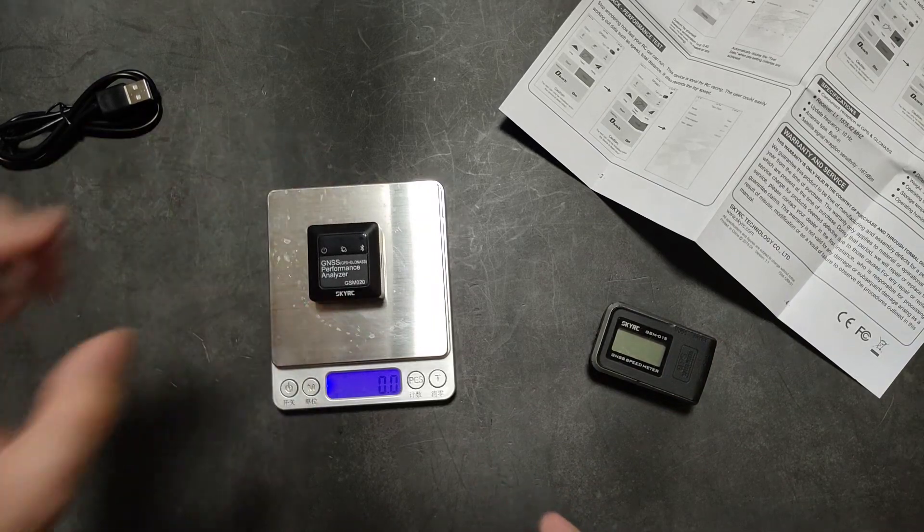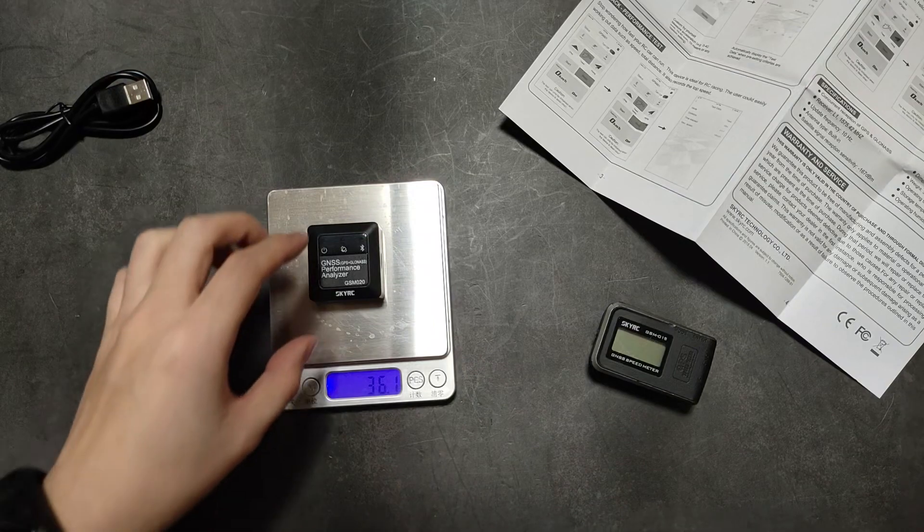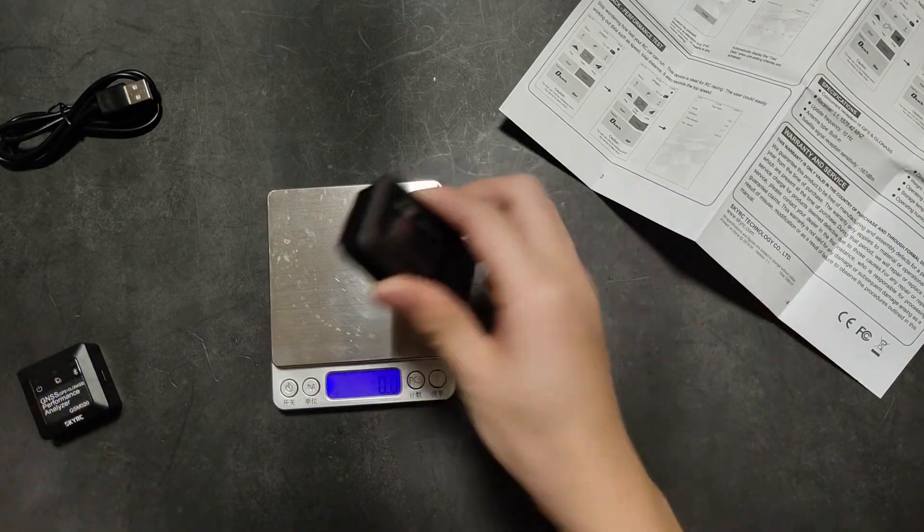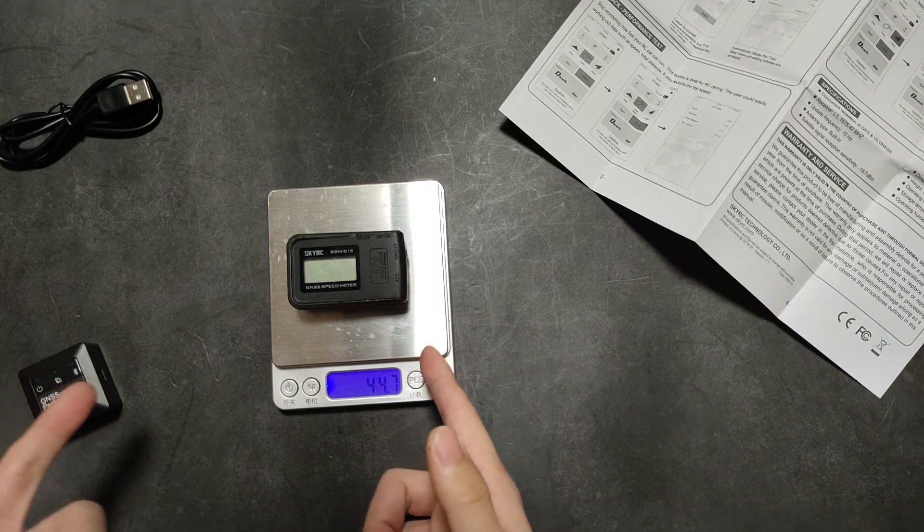Here you can see the O20 is 36.1 grams. Now let's see, the O15 is 44.7. It's a little bit heavier.